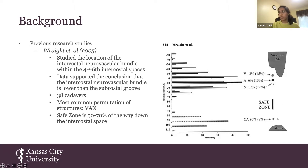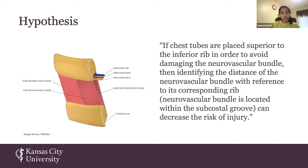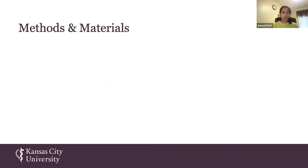The reason that's important is because you have the collateral artery running just superior to the inferior rib. Oftentimes when physicians are taught to insert chest tubes, they're told to hug the superior border of that inferior rib — however, if you do that, you may risk damaging that collateral artery as well. Our research hypothesis was: if chest tubes are placed superior to the inferior rib to avoid damaging the neurovascular bundle, then identifying the distance of the neurovascular bundle with reference to the corresponding rib can decrease the risk of injury.